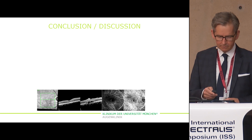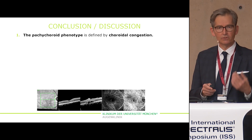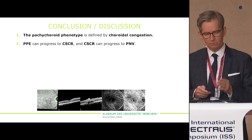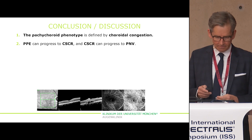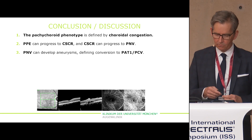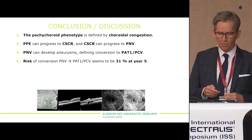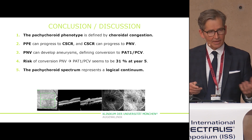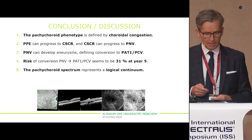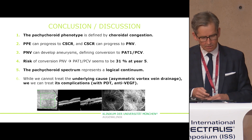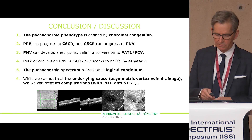In conclusion, the Pachychoroid phenotype is defined by choroidal congestion. Pachychoroid pigment epitheliopathy can progress to central serous choroidopathy, and central serous choroidopathy can progress to PNV. PNV again can develop aneurysms, defining the conversion to aneurysm type 1 CNV or polypoid choroidal vasculopathy. We've shown that within five years we have to expect 31% of patients with this transition. The Pachychoroid disease spectrum represents a logical continuum and while we cannot treat the underlying cause — the asymmetric vortex drainage — we can treat its complications with PDT, half-dose PDT, and anti-VEGF. Thank you very much for your kind invitation.